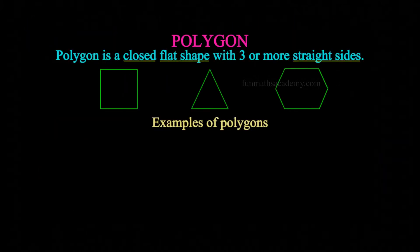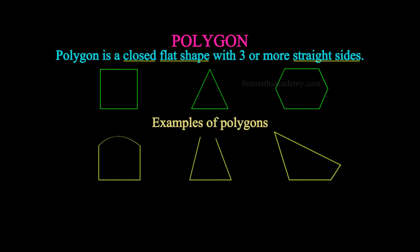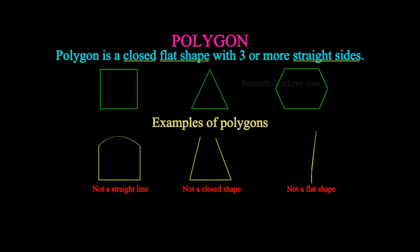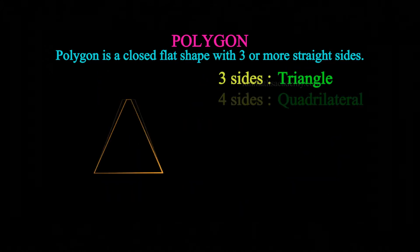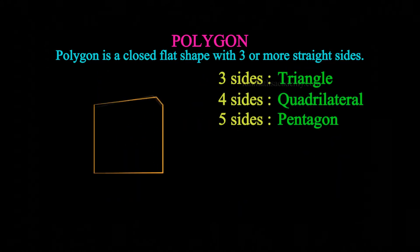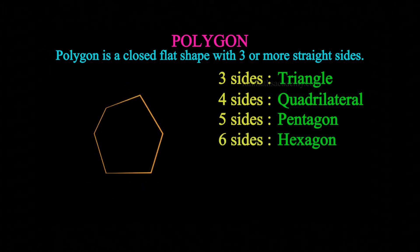In the previous video, we checked out that a polygon is a closed 2D shape with three or more straight lines. To learn about in detail or to recall those concepts, check out the link to that video which is given in the description box.